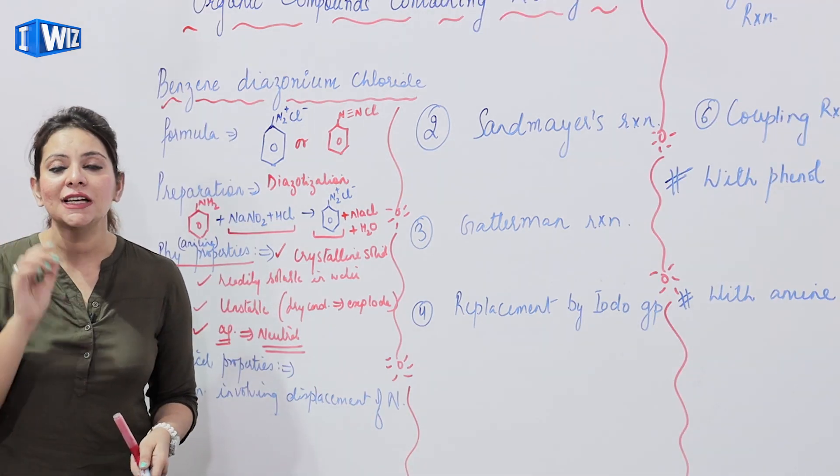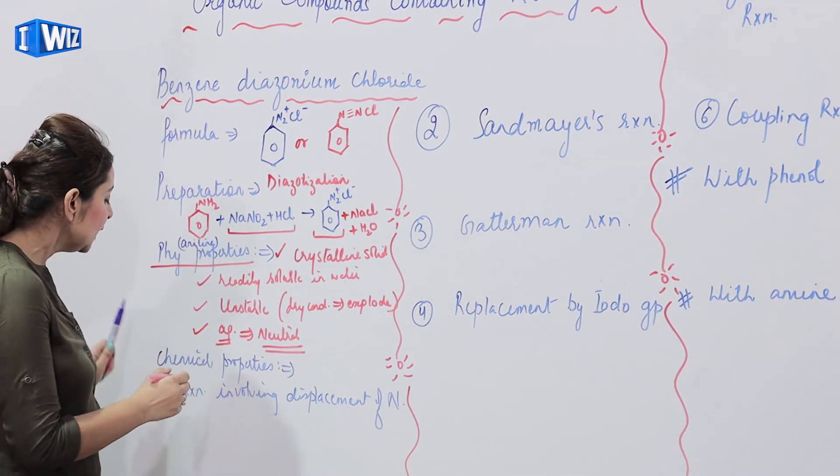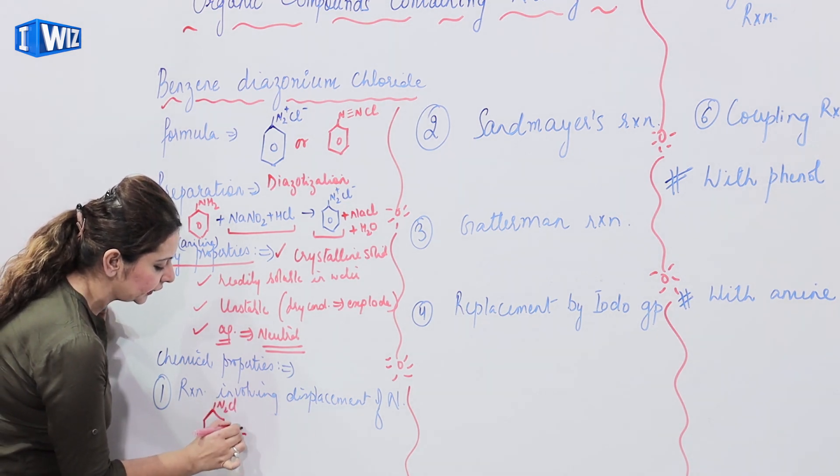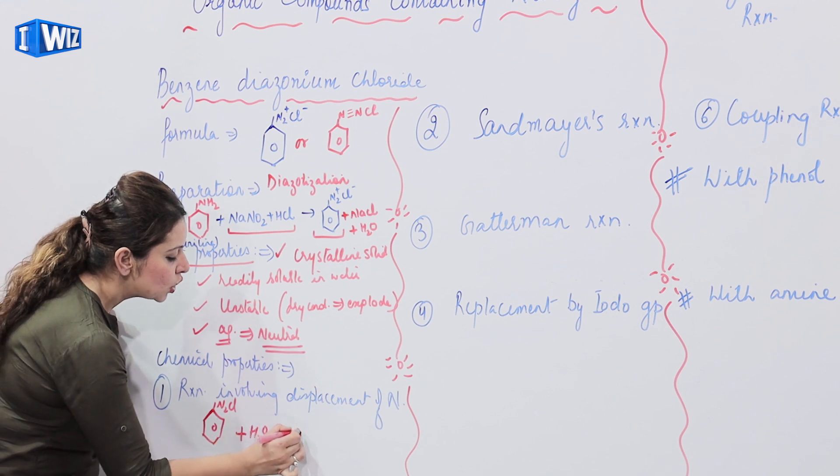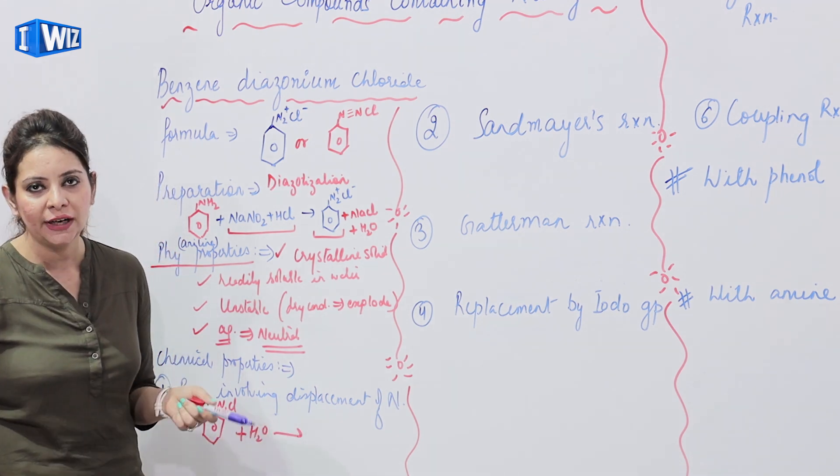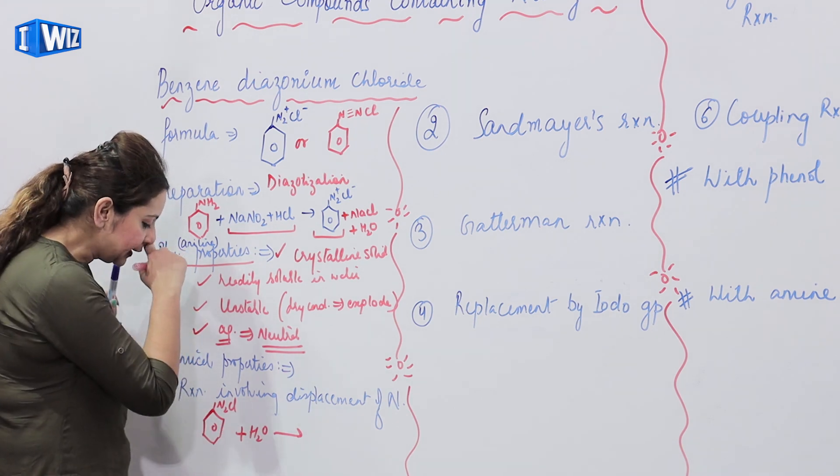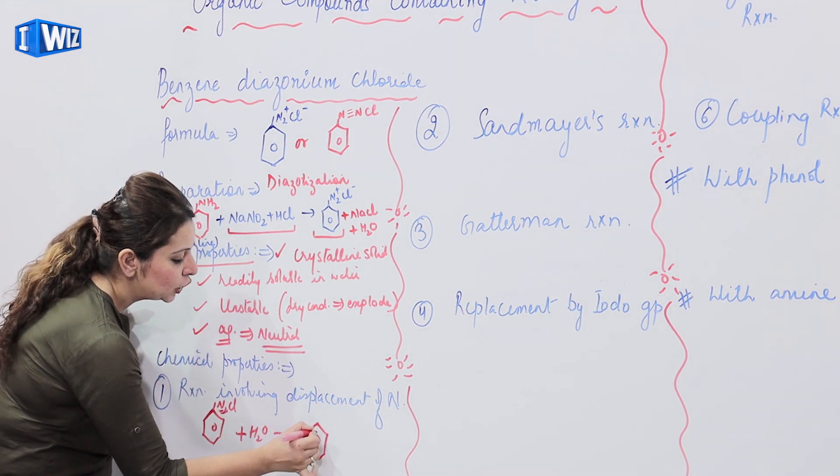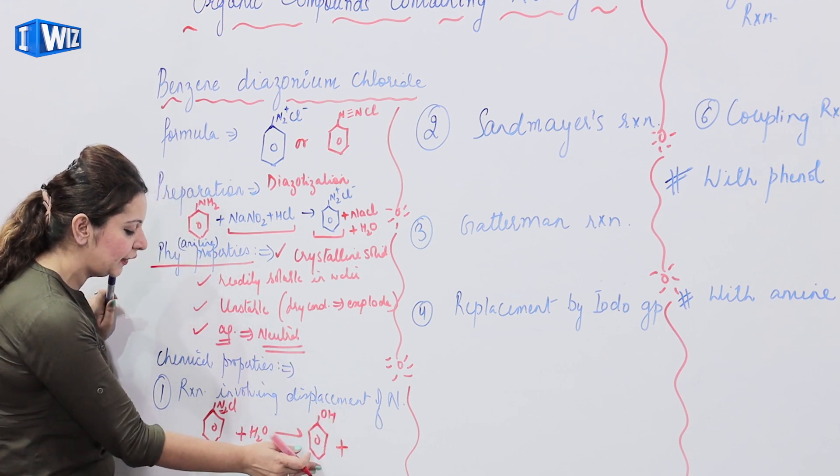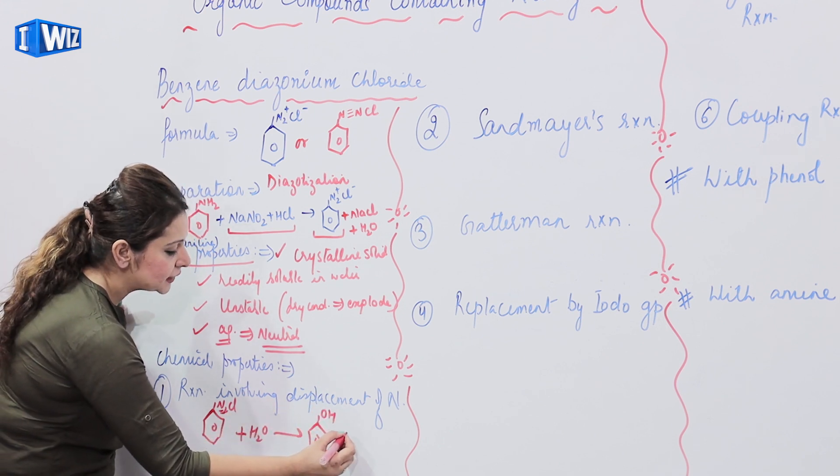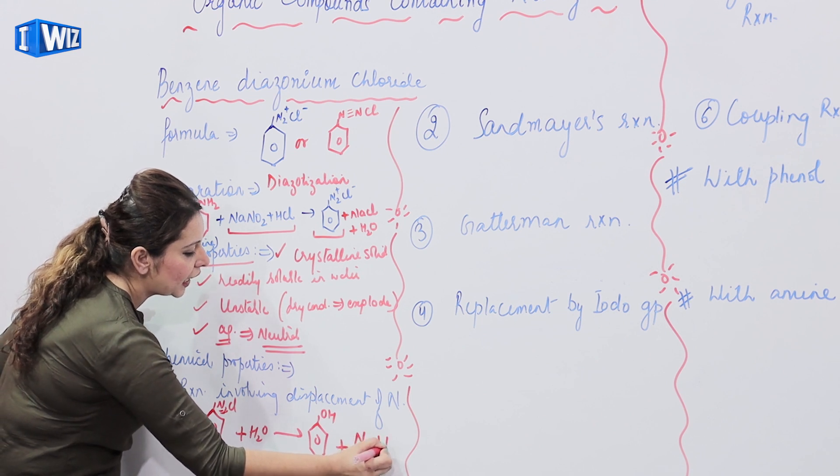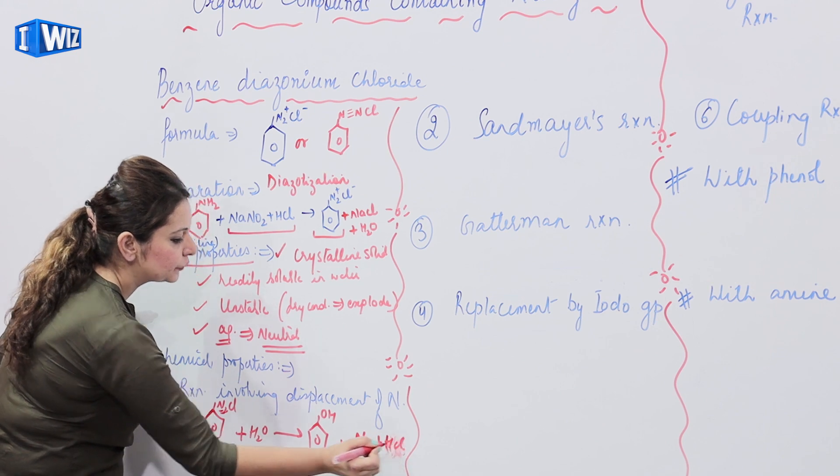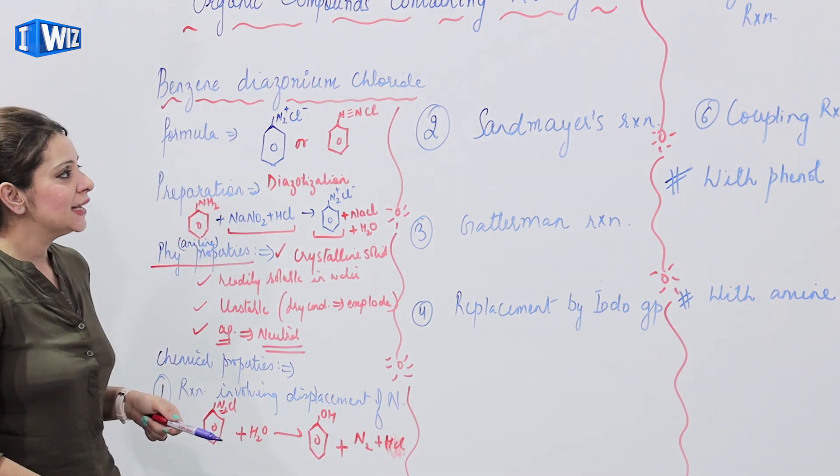Now, moving on to its chemical properties. First chemical property, we will see where we react benzene diazonium chloride with water. We are trying to cause hydrolysis. It is quite reactive. When we react it with water, nitrogen gets displaced. We get phenol. What we get, we get phenol, and along with this, we get N2, and we get HCl.